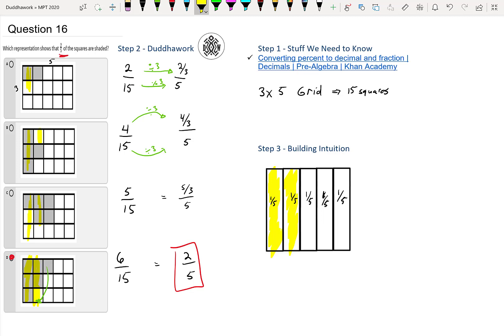You could also do it into percentage. Two-fifths is equal to 0.4 or 40%. And then you could just divide 2 over 15. Let's say we do it here, 2 divided by 15. You can see that it's only 13%. That's not 40%. But if you do 6 over 15, that should be 0.4 or 40%, right? So that's another way you can do it.